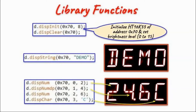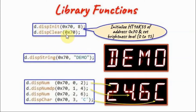Before we go into detail on how to create the library, let's have a look at the available library functions. We have display initialization, which will initialize the HD16K33. It has two arguments: the first argument is the slave address of the device, and the second argument is the brightness level, which is between 0 and 15. The second function is display clear, which has one argument — the address of the device — and its purpose is to clear the four-digit display.